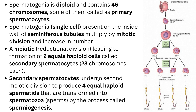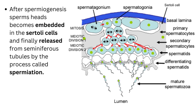The spermatids are transformed into spermatozoa, that is sperms, by the process of spermiogenesis. After spermiogenesis, sperm heads become embedded in the Sertoli cells and are finally released from the seminiferous tubules by the process called spermiation, as you can see in the diagram.